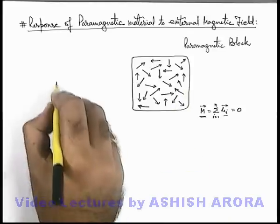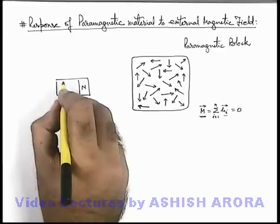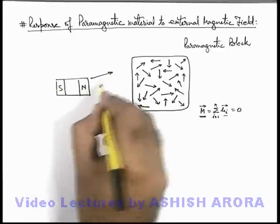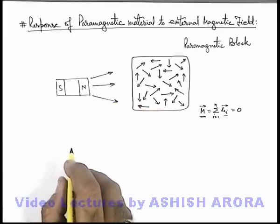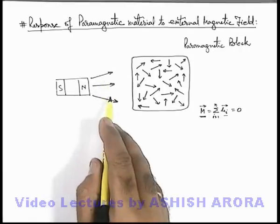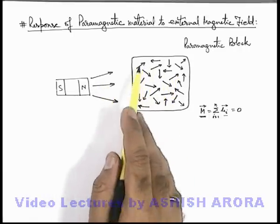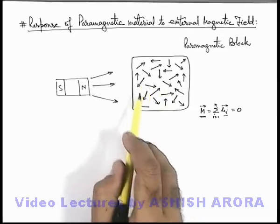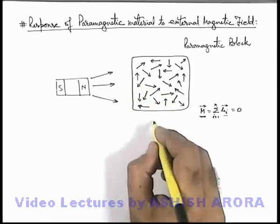Now if an external magnetic field is applied by getting a magnet close to it, which applies a magnetic field from left to right, then as we have studied in the previous section, due to this magnetic field all these dipoles will experience a torque and will have a tendency to align in the direction of the external magnetic field.